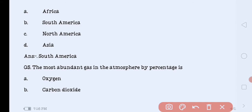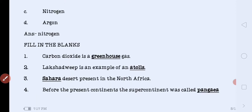Next is our question. The most abundant gas in the atmosphere by percentage. Which gas is most abundant in our atmosphere? Oxygen, carbon dioxide, nitrogen or argon. Which gas is that? The correct answer is nitrogen.